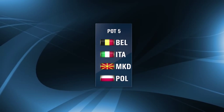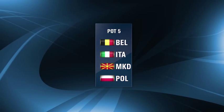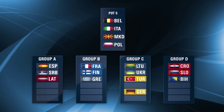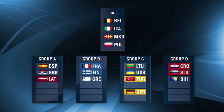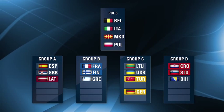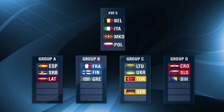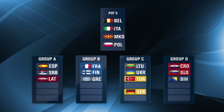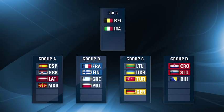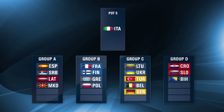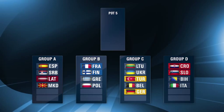Pot 5 is a straight draw with the first selected country going to Group A, followed by the next in Group B and so on. For example, the former Yugoslav Republic of Macedonia is drawn first and goes to Group A. Poland is drawn second to Group B, Belgium third to Group C and Italy finally goes to Group D.